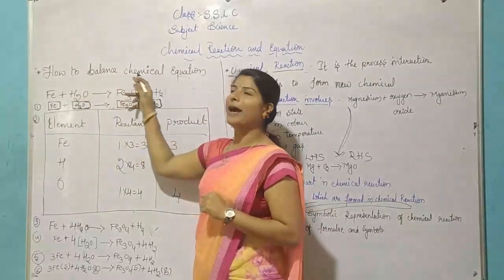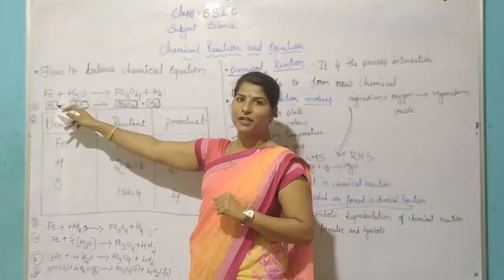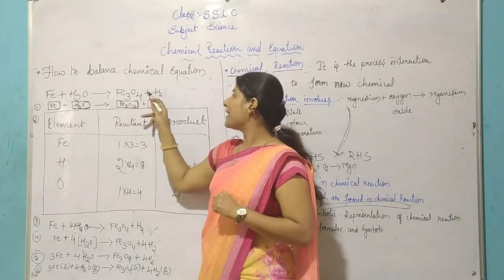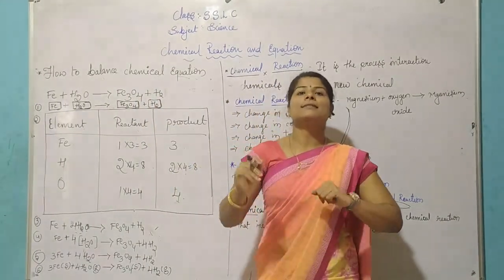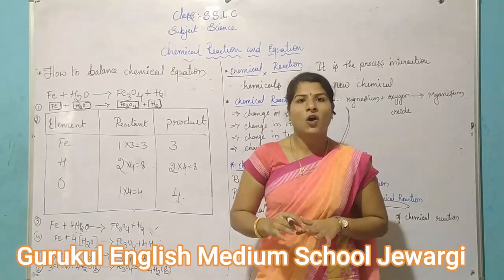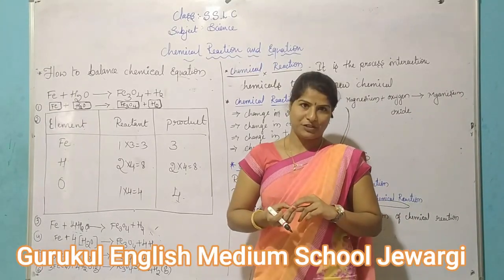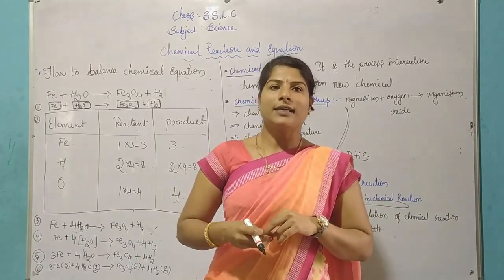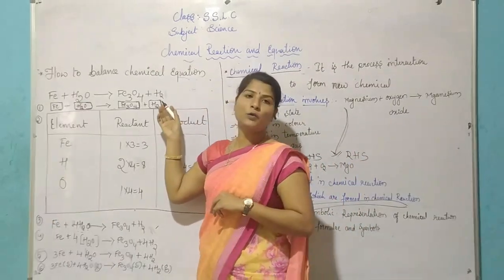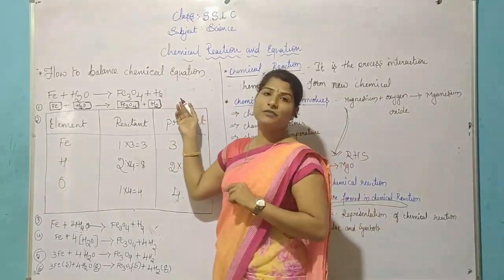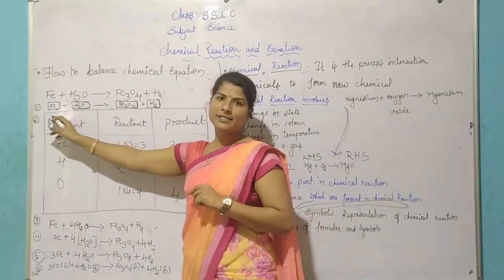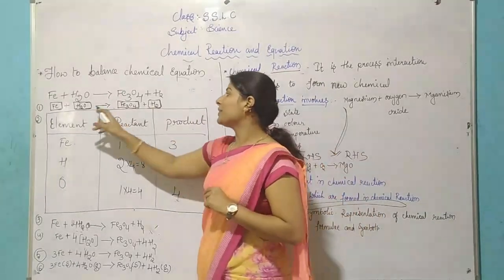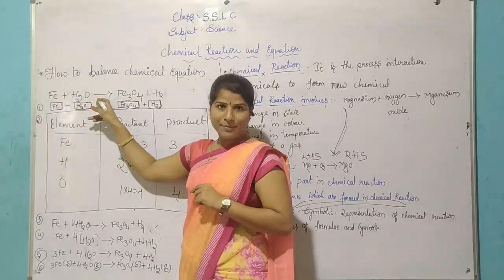Now we are discussing how to balance chemical equations. We take the equation: Fe + H2O → Fe3O4 + H2. This is an unbalanced chemical equation, also called a skeletal chemical equation. After writing the skeletal equation, we have to balance it. First, we make boxes for each element to count how many of each element are present.